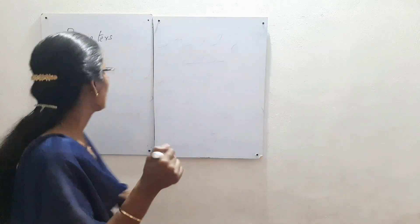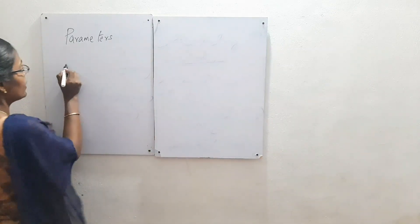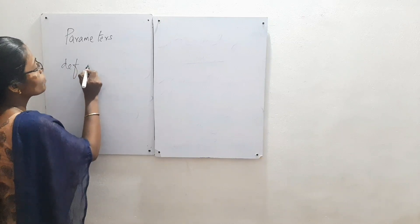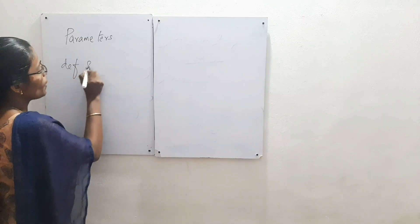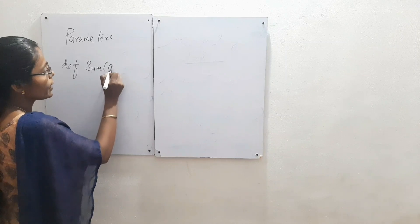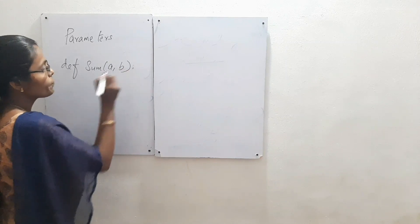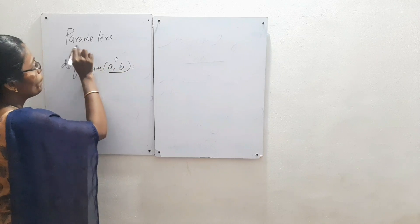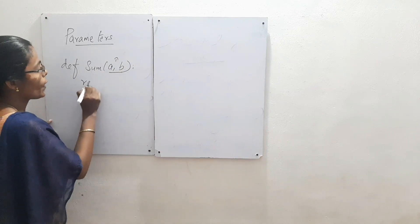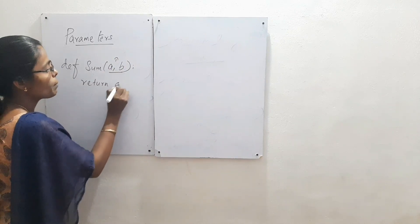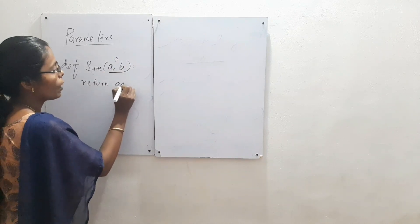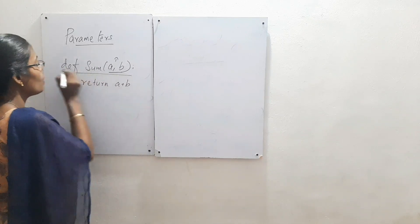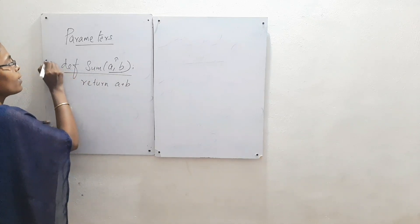For example, I can write: `def` is the keyword. So if it is `sum`, I can write `a, b`. So these are called parameters. I can write `return a + b`. This is my function, and this is called the function header.